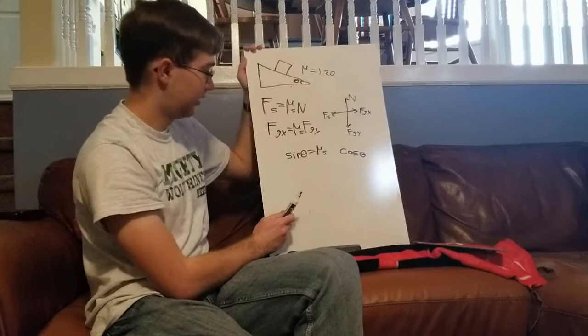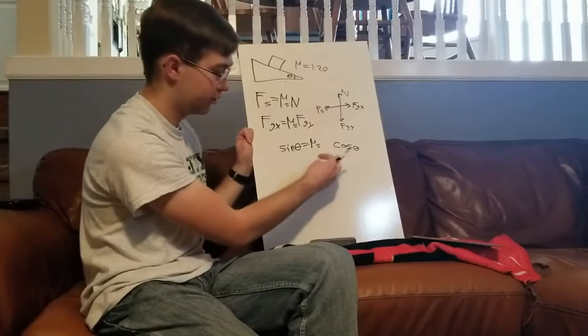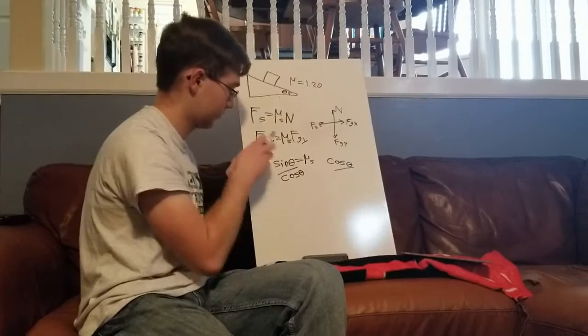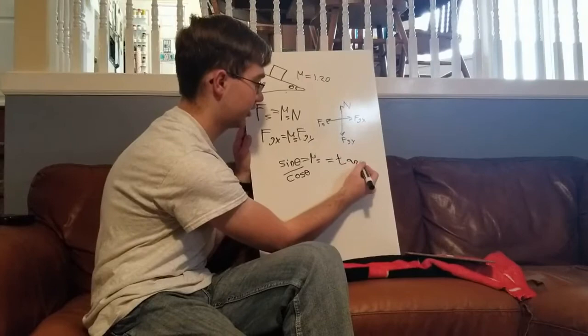Now, I can use a trigonometric identity and actually divide both sides by cosine of theta. And sine of theta over cosine of theta equals the tangent of theta.